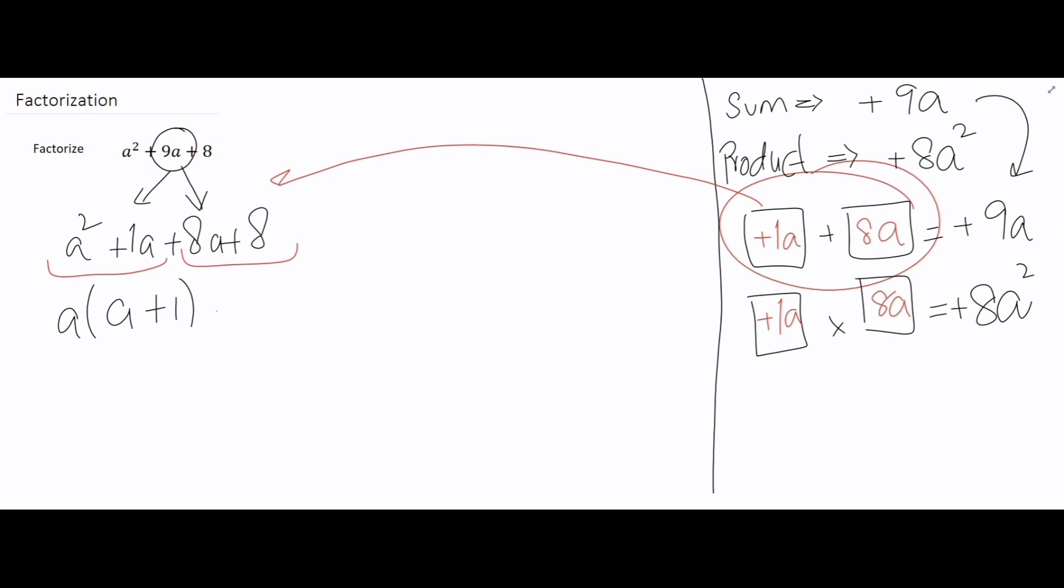And for the other pair we can see that 8 is common, so we are going to write it outside the bracket. And 8a and 8 divided by 8 is a, and 8 divided by 8 is 1.